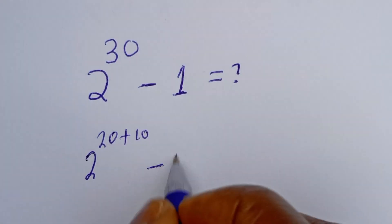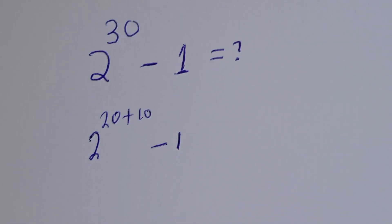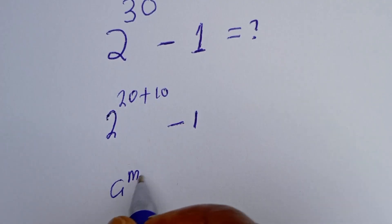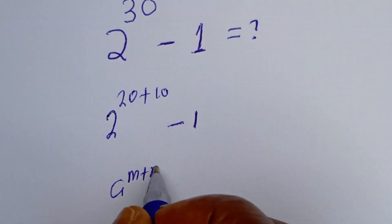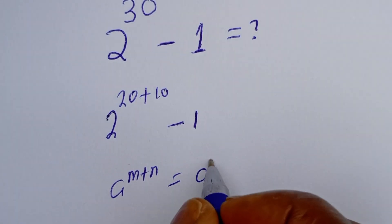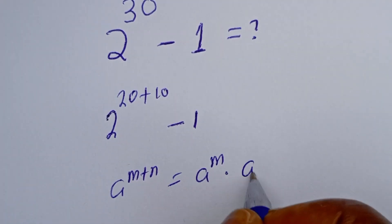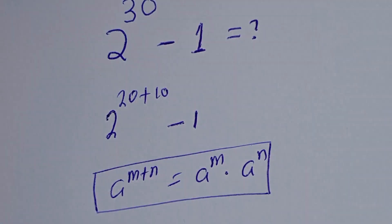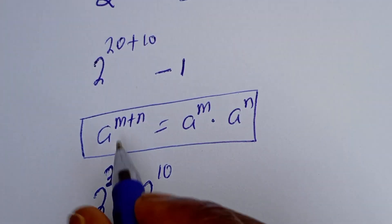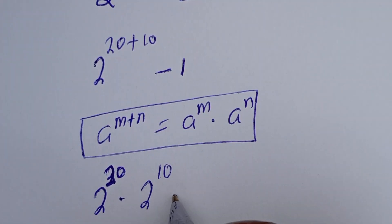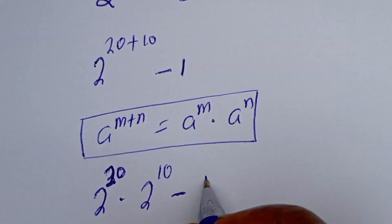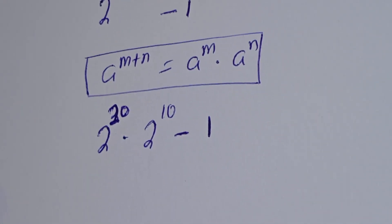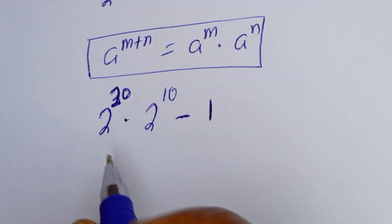Take note that if you have a to the power of m plus n, this is equal to a to the power of m multiplied by a to the power of n. So this becomes 2 to the power of 20 multiplied by 2 to the power of 10, minus 1.